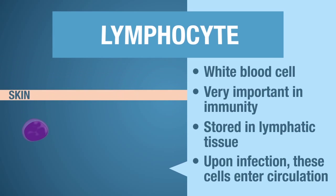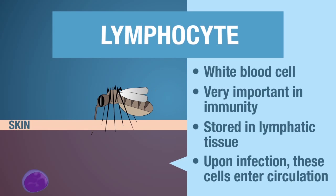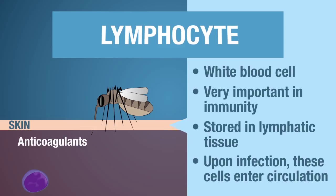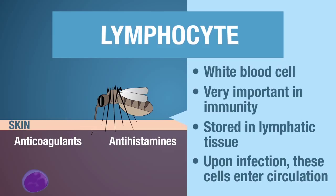Let's say, for example, that you were bit by a mosquito, and during its blood meal, it injected the virus that causes West Nile virus into your body. Most people think of mosquitoes as bloodsuckers — that's true — but in order to do that, they also have to spit anticoagulants and antihistamines into your body. Thus, the virus is injected into your body.